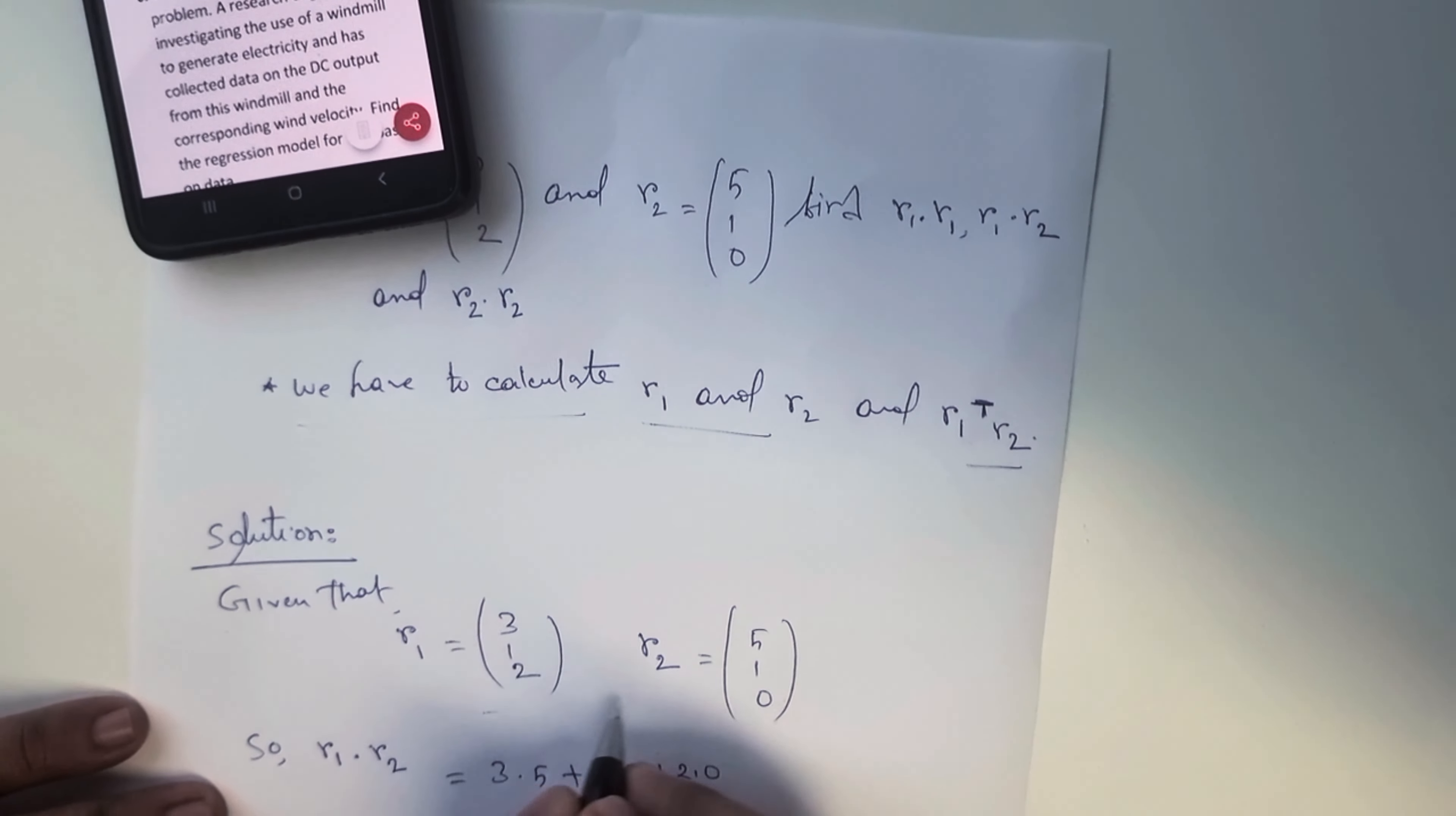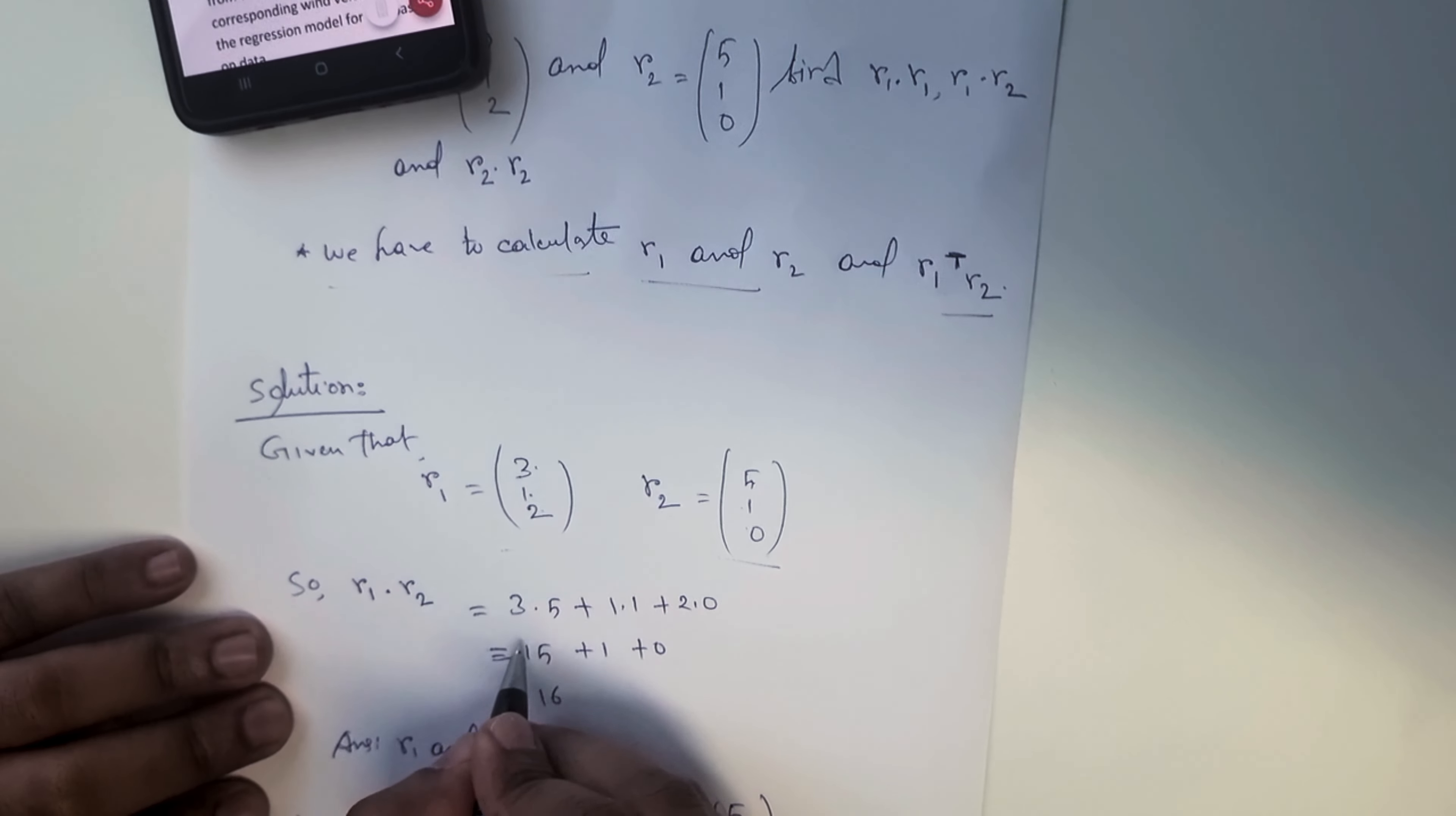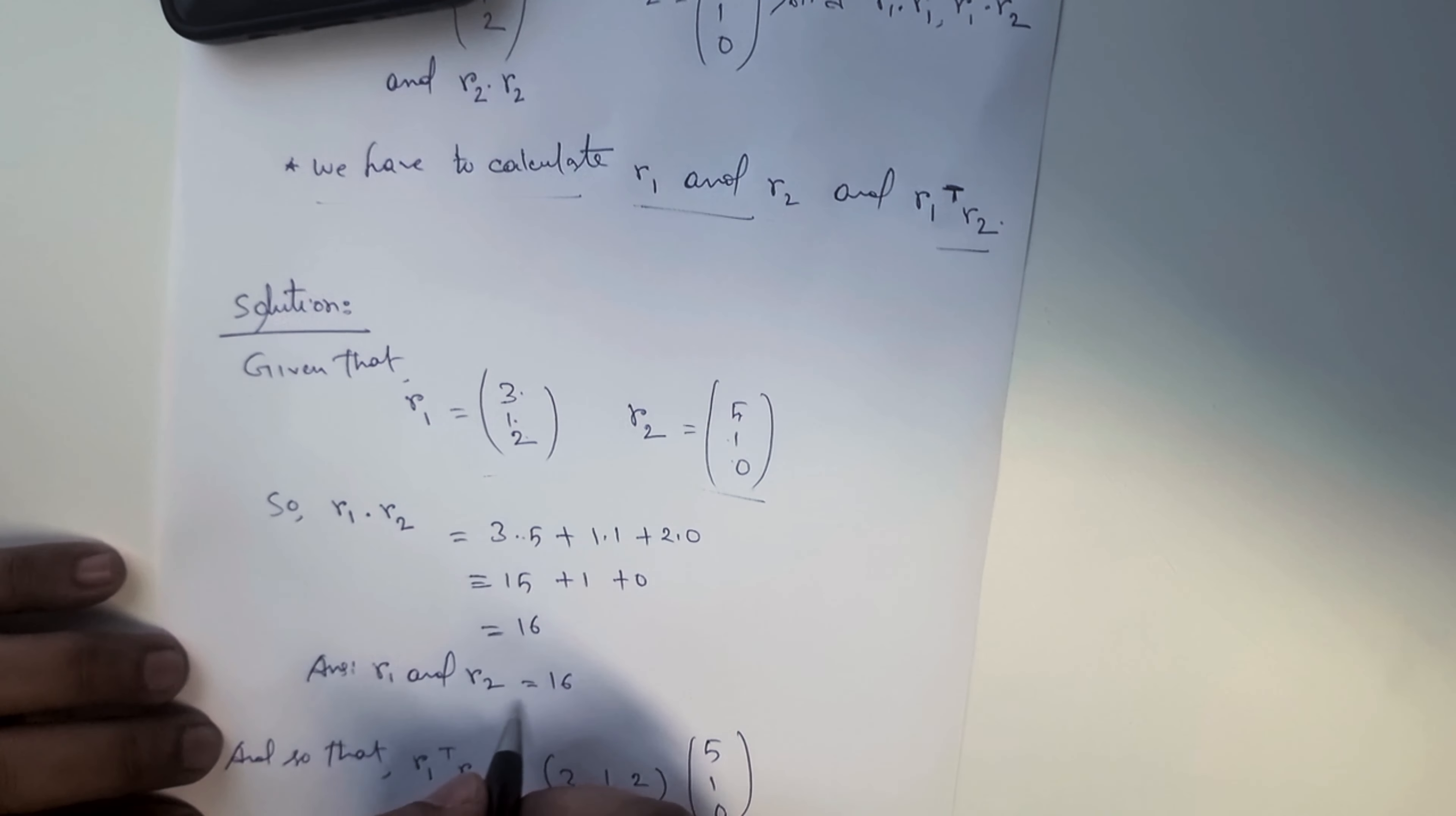Solution: it's given that r1 values and r2 values, so r1 into r2 is equal 3 into 5 plus 1 into 1 plus 2 into 0. Here 3 into 5 is 15 plus 1 into 1 is 1, 2 into 0 is 0, so here is the total sum it's 16 and this is the answer.